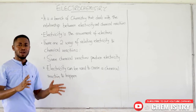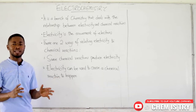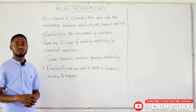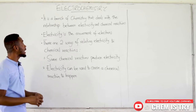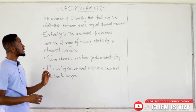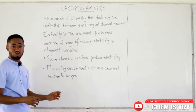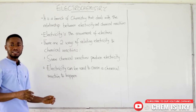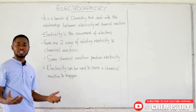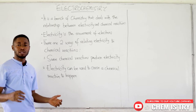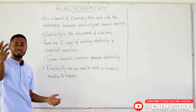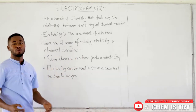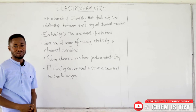There are several ways of defining electrochemistry, but in simple terms, electrochemistry is the branch of chemistry that deals with the relationship between electricity and chemical reactions.